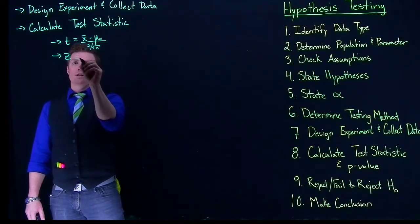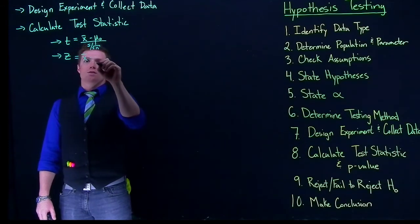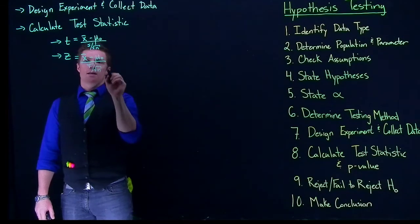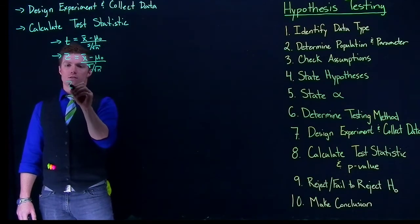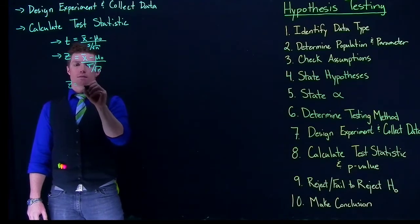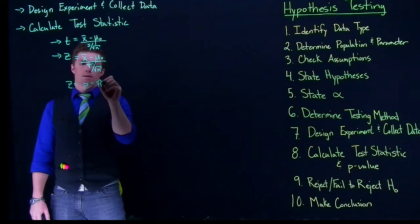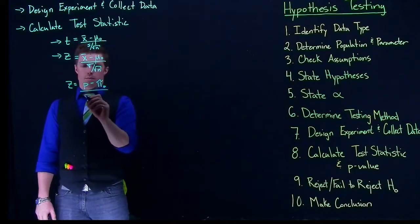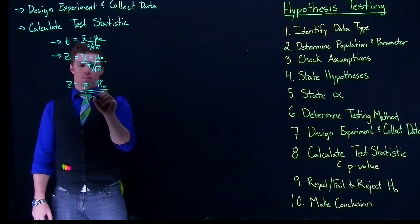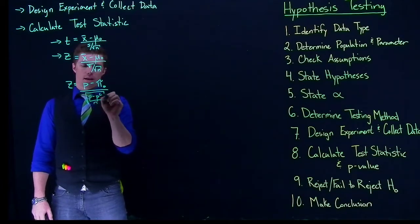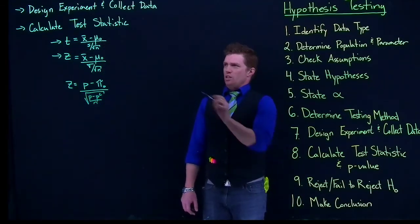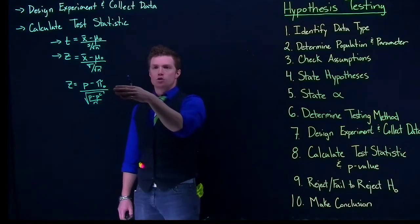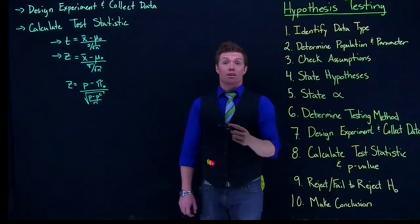For z, if we're dealing with means, this would be x-bar minus mu naught, divided by sigma divided by the square root of n. Or if we're dealing with proportions, this is going to be p minus pi naught, divided by the square root of p times (1 minus p) divided by n. So instead of using the true mean, we use the hypothesized mean or the hypothesized true proportion to calculate our test statistics.